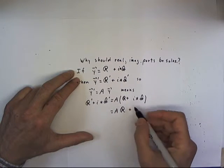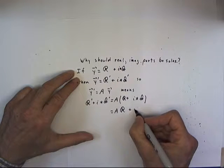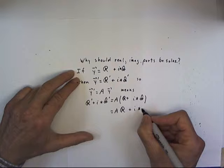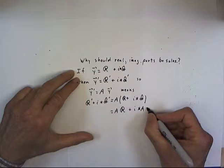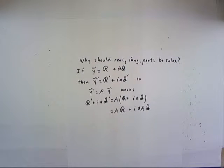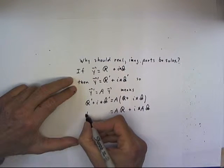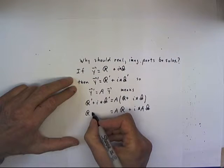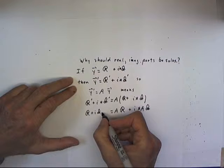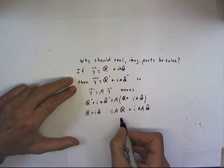and I'm not going to write that in two steps. I'm just going to say that's then I times A times the imaginary part. And that is, of course, equal to the real plus I times the imaginary part of the solution.